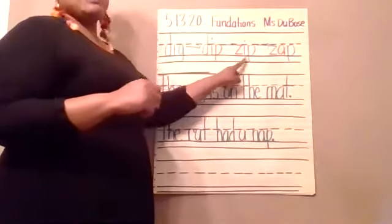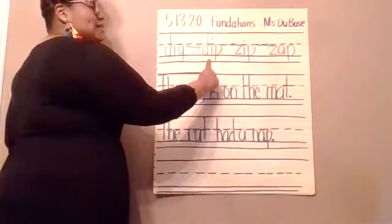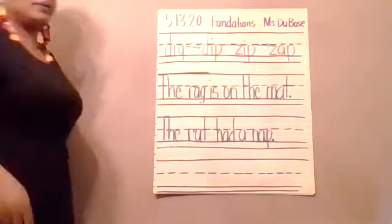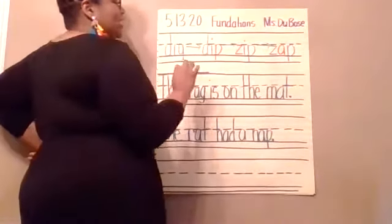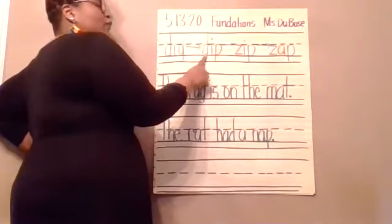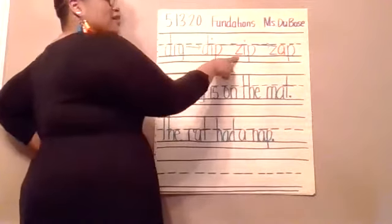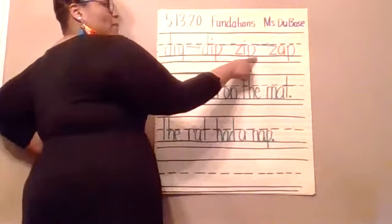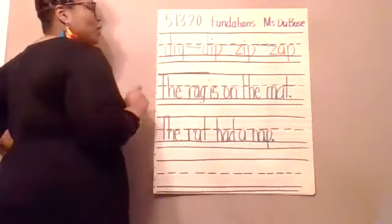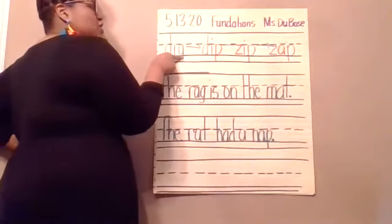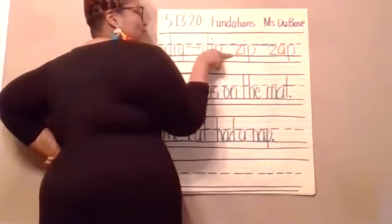Now if I go to my next word, it is zip. Who can tell me how we got from dip to zip? We did change the beginning sound from d to z, so we replaced the D with a Z. And now we have z-i-p, zip. We went from dip, changed the D to a Z, and now we have zip.